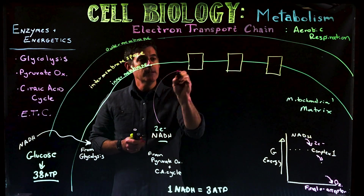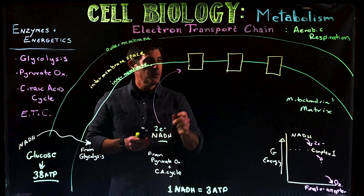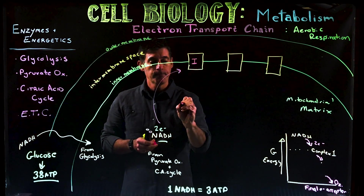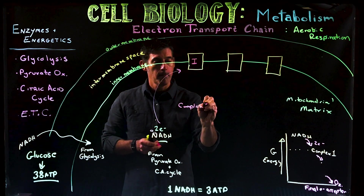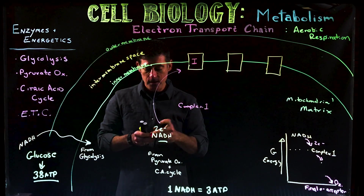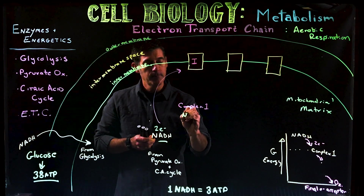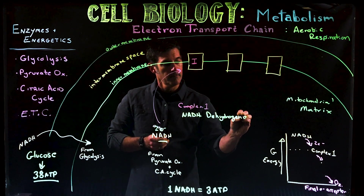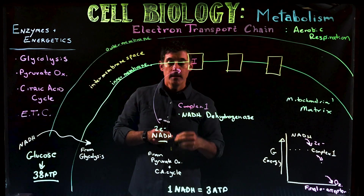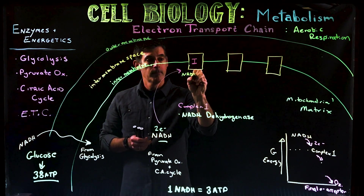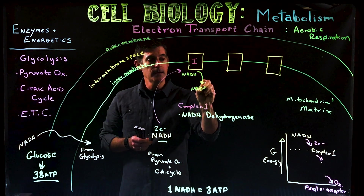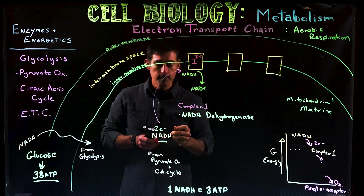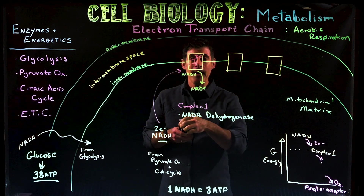NADH is going to enter the electron transport chain, which is made up of three transmembrane proteins. The first protein is called Complex I, and its actual name is NADH dehydrogenase — the name tells you what it does. It's going to take the NADH molecule, and we leave with NAD+. The two electrons from NADH are now held at this protein, which will then pass them along to something else.